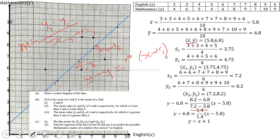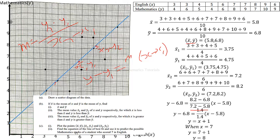So when we have an English score of 7, you put x equals 7, and y will be equal to 8. Therefore, the mathematics mark of a student who scores 7 in English is 8. That is the possible mathematics mark.